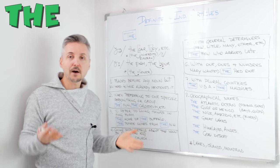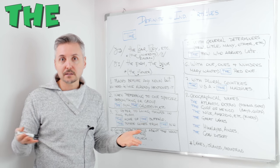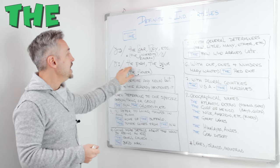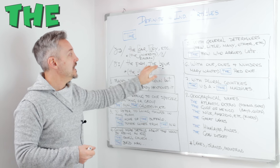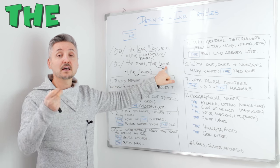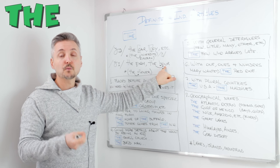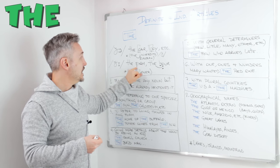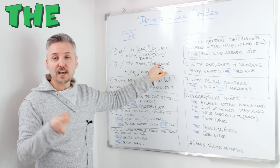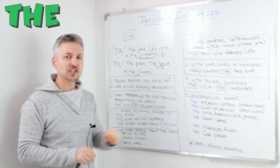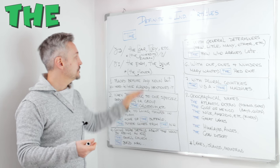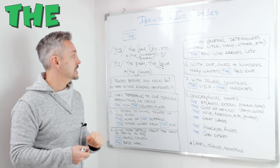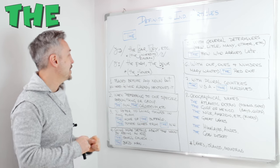How do we pronounce 'the' with vowels then? Well, 'thee'. 'The exam' — in this case the word starts with a vowel. And obviously we have 'h' here, but the 'h' is mute, so we don't pronounce it. So 'our' is a vowel sound.